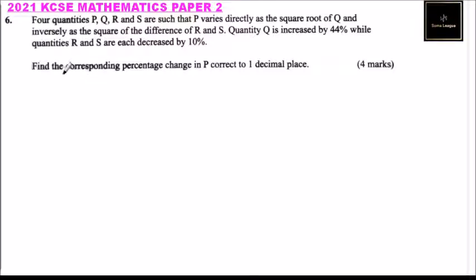Question number six. Four quantities P, Q, R, and S are such that P varies directly as a square root of Q and inversely as the square of the difference of R and S. Quantity Q is increased by 44% while R and S are each decreased by 10%. Find the corresponding percentage change in P correct to one decimal place.